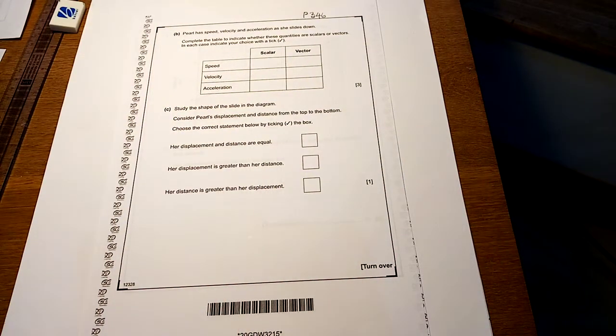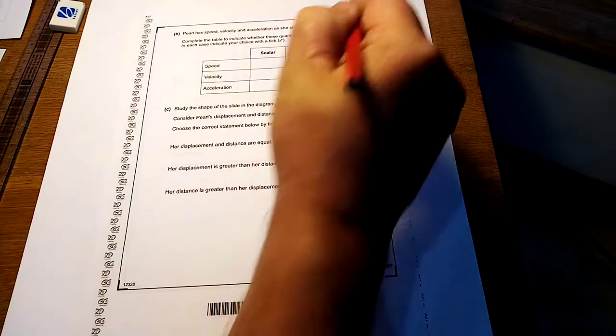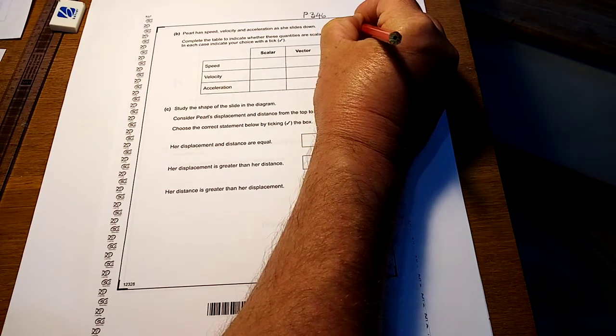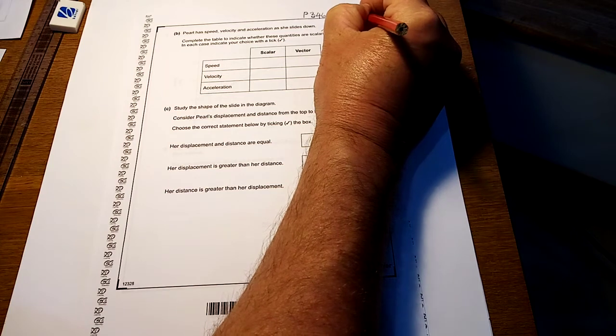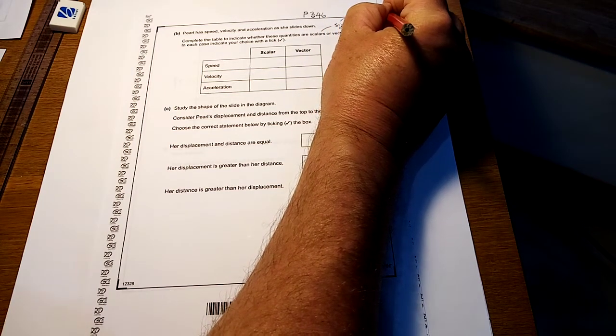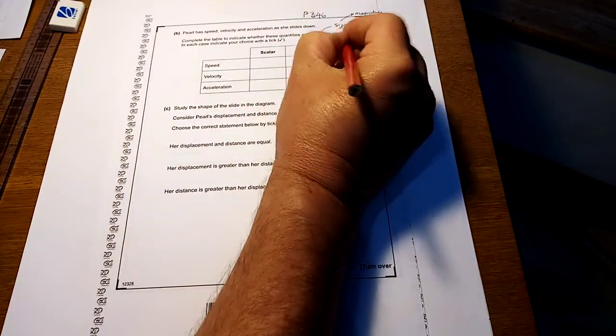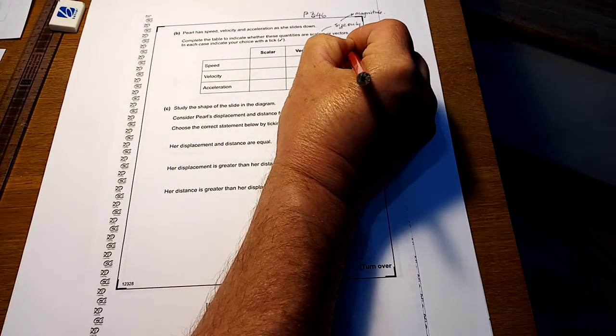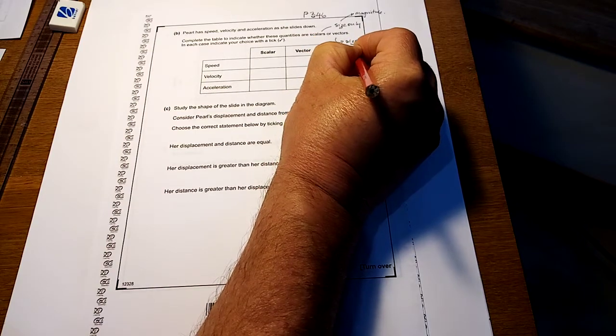Now, Perl has speed, velocity and acceleration as she slides down. Complete the table to indicate whether these quantities are scalars. Scalars have size only, and the fancy name for size is magnitude. Right, so magnitude only. Scalars have size, magnitude and direction. So that's what makes them different.